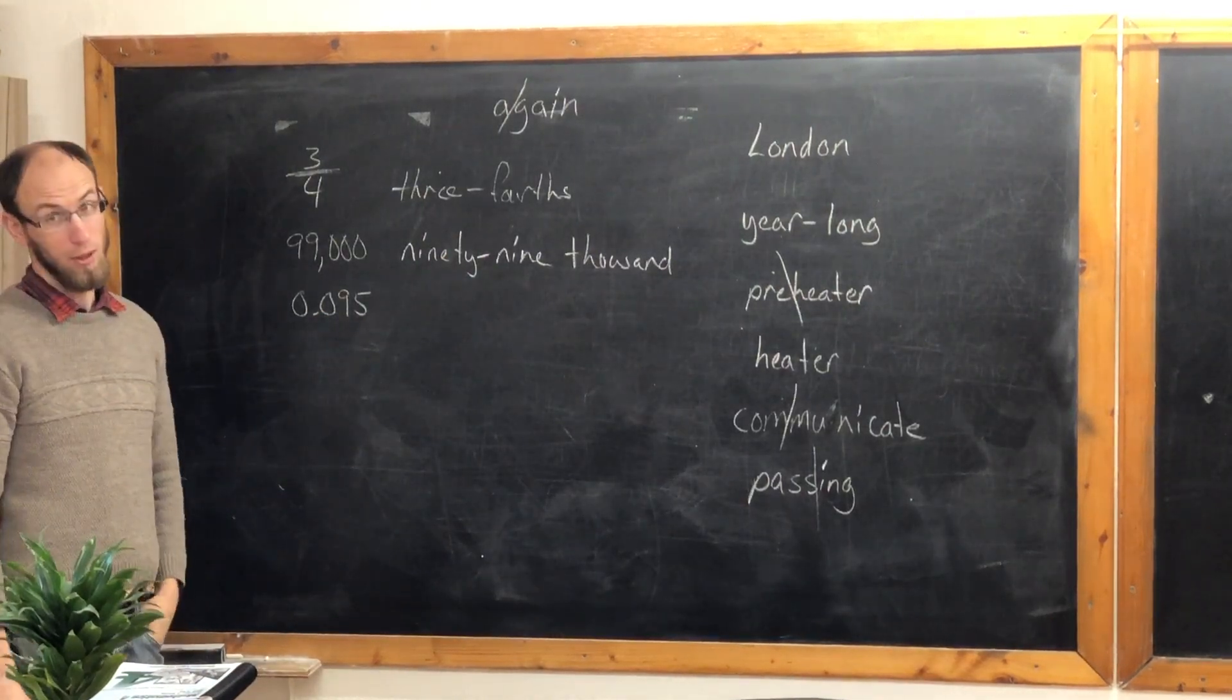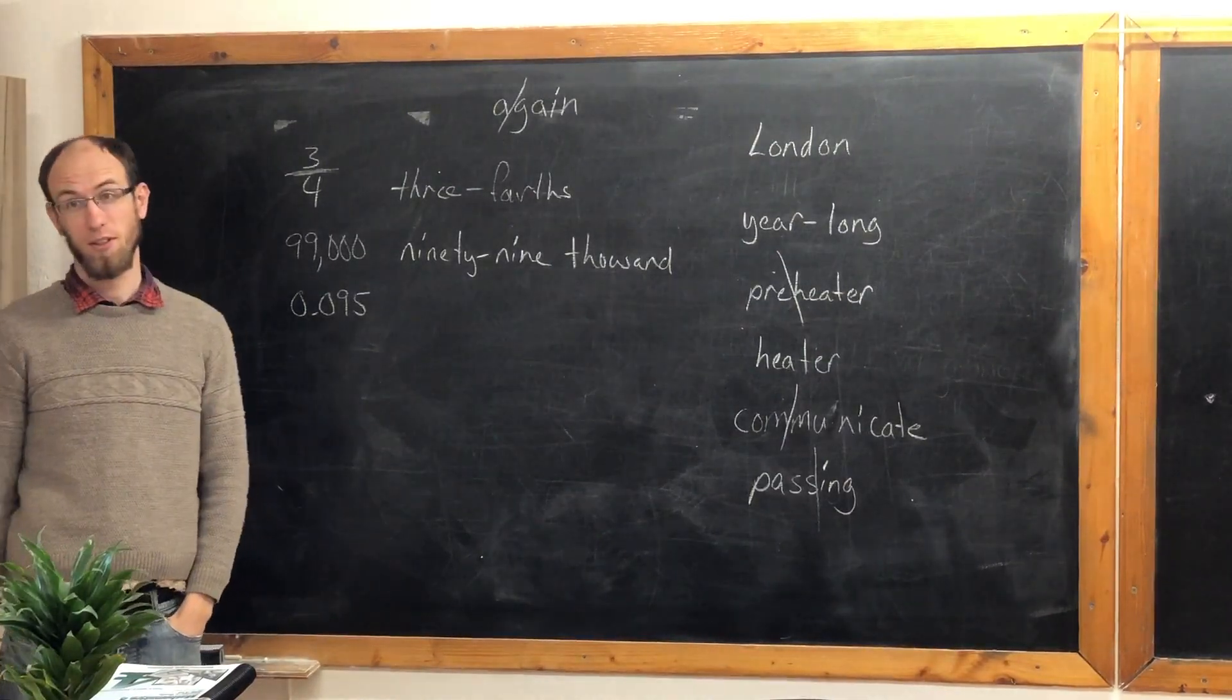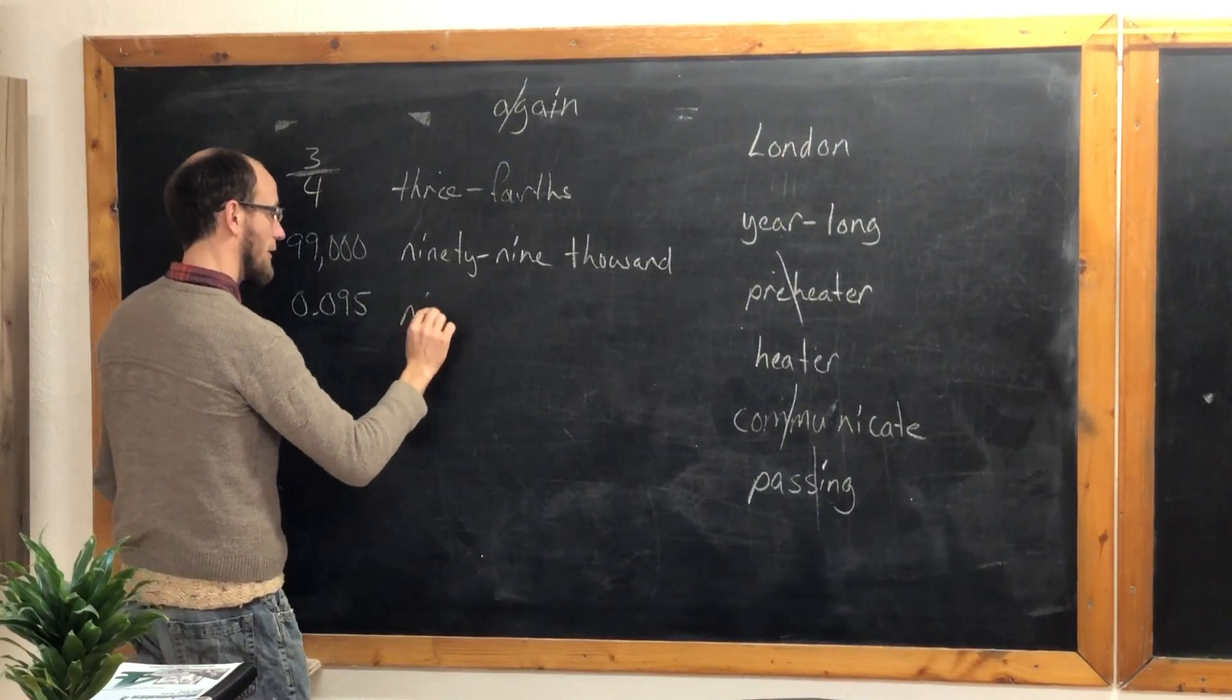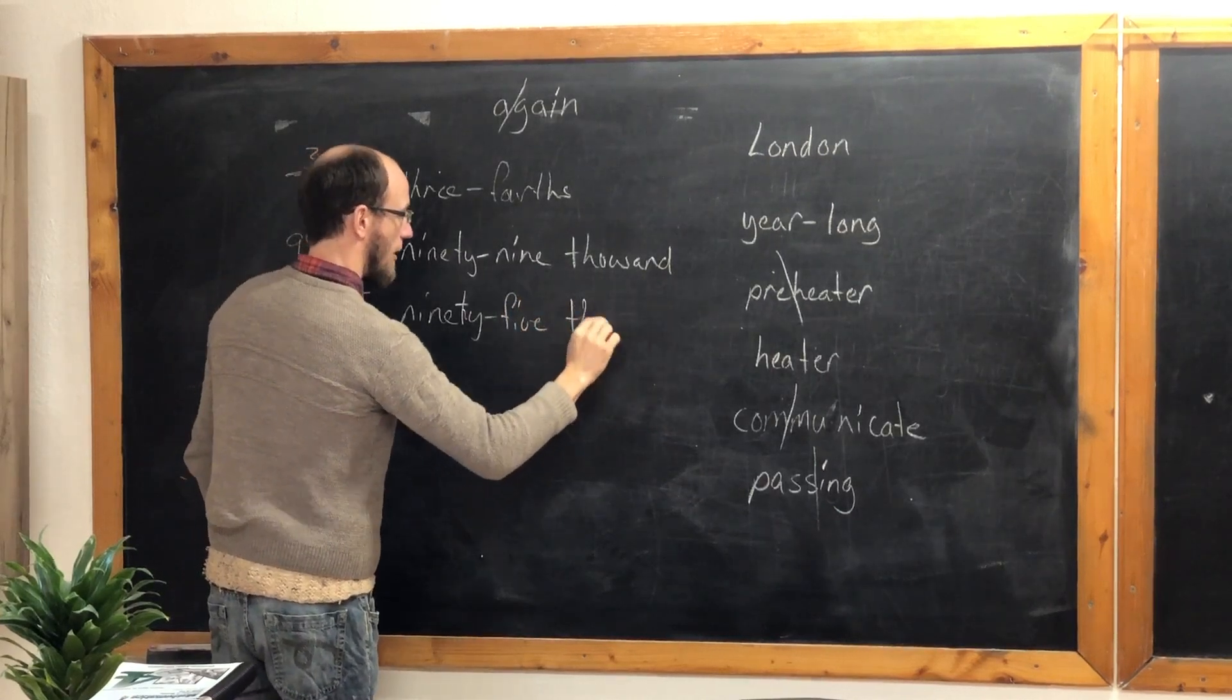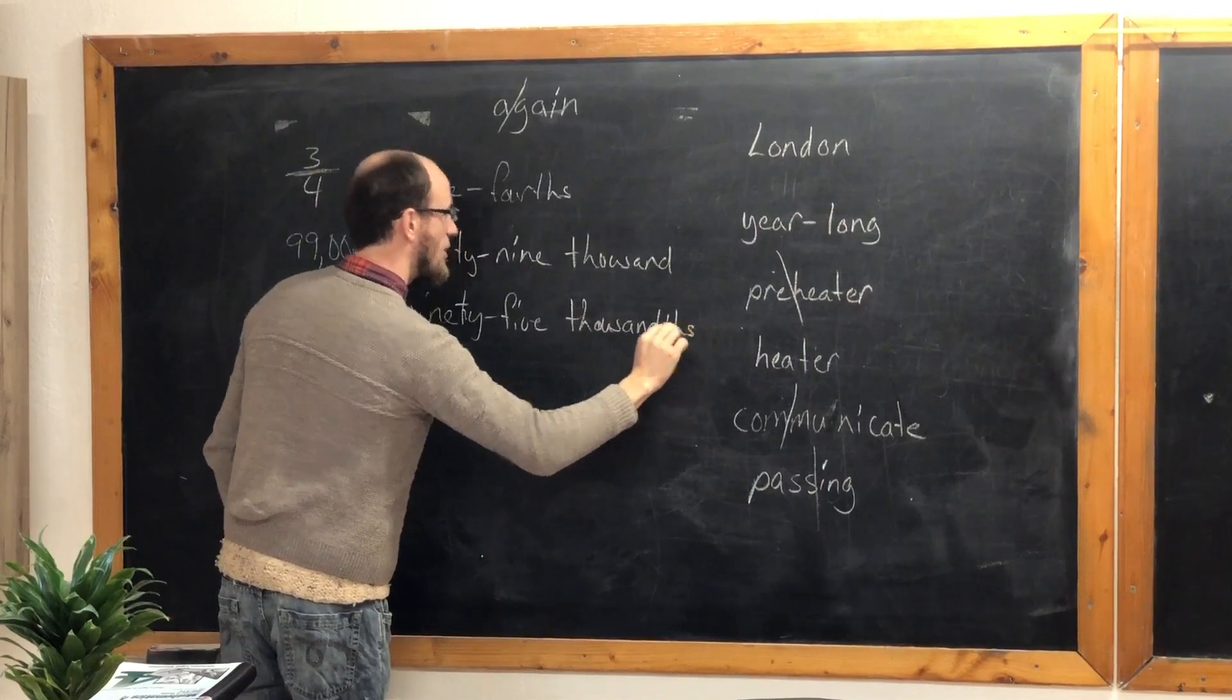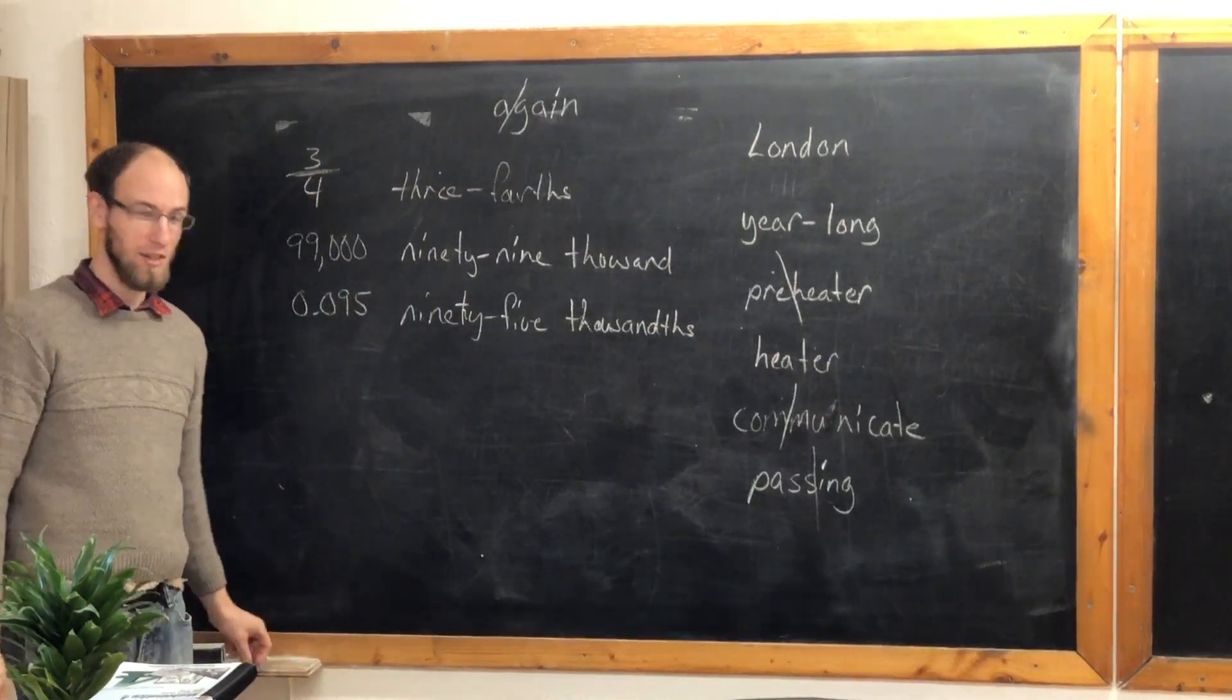What is this number? Don't say 0.095. It is ninety-five thousand. Good. Ninety-five thousand with a hyphen between the 90 and the 5.